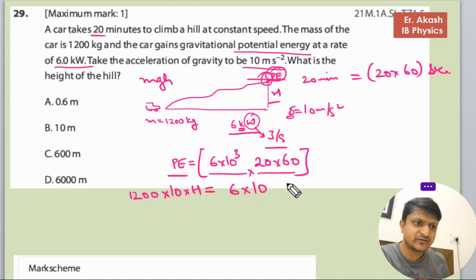Equals 6 × 10³ × 20 × 60. So 20 × 60 is 1200, so 1200 cancels out. And with 10, this will remain 2, so h equals 600 meters.